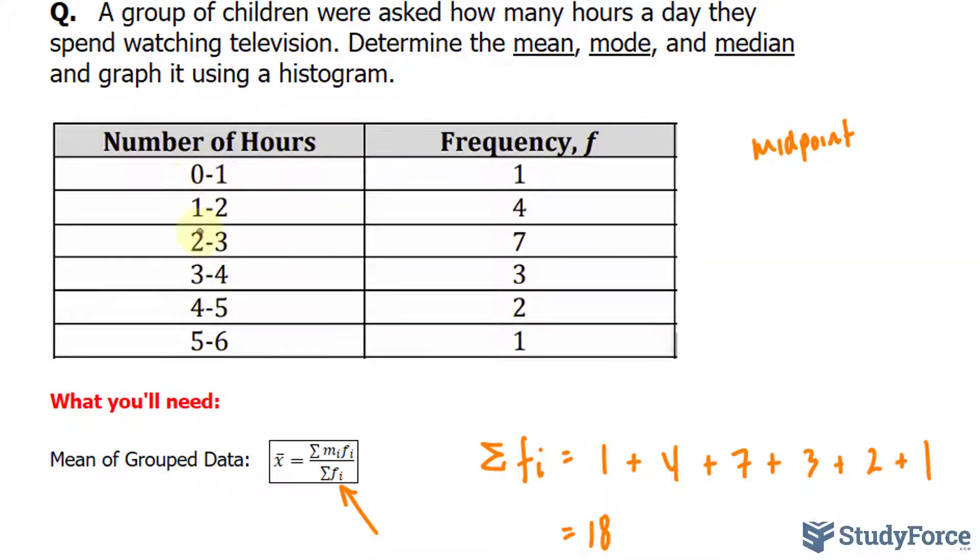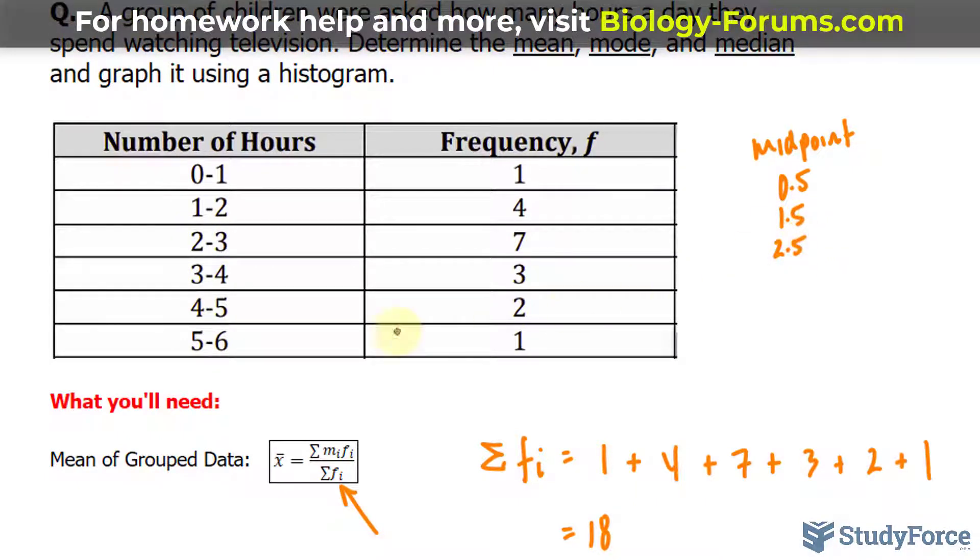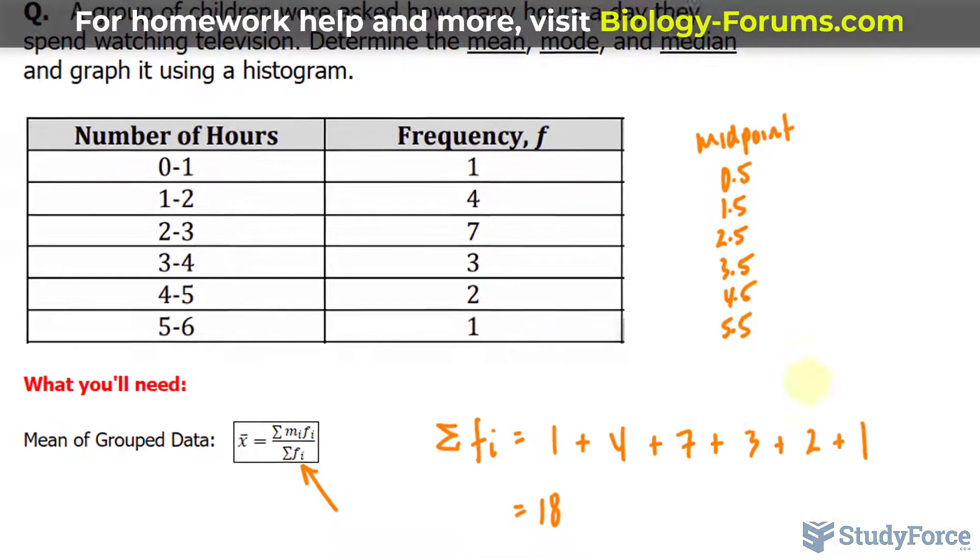So the midpoint between 0 and 1 is 0.5. The midpoint of 1 and 2 is 1.5. To find the midpoint, you simply add the two numbers up, 1 and 2, which is 3, and divide it by 2. So 2 and 3 makes 5, divided by 2 is 2.5, 3.5, 4.5, and 5.5. We'll produce another column now.